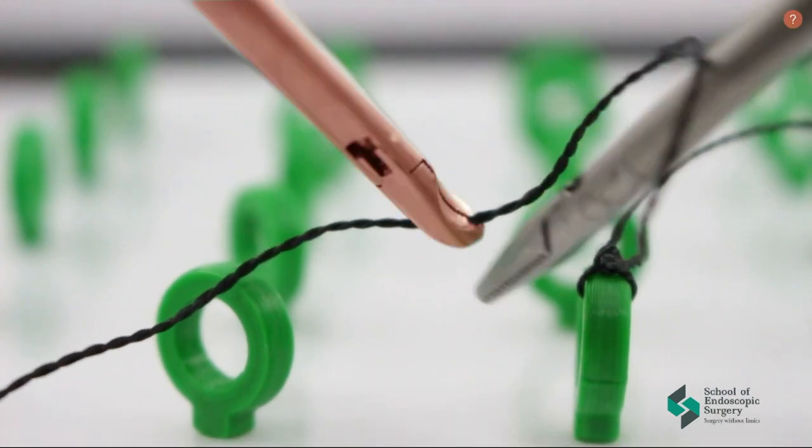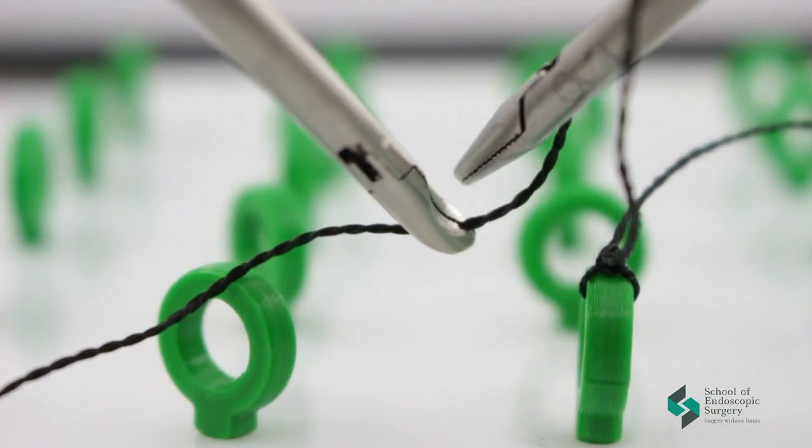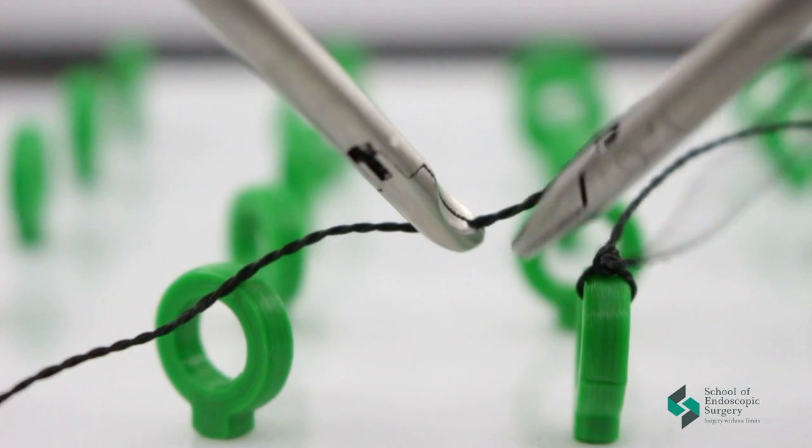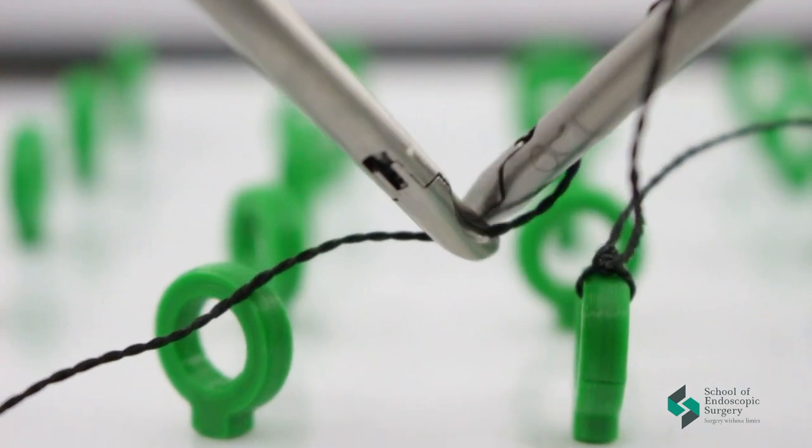As you can see, the training of the intracorporeal knot consists of three main steps. The first step is you must hold the thread with one instrument and start rotating the thread along the axis with other instrument.